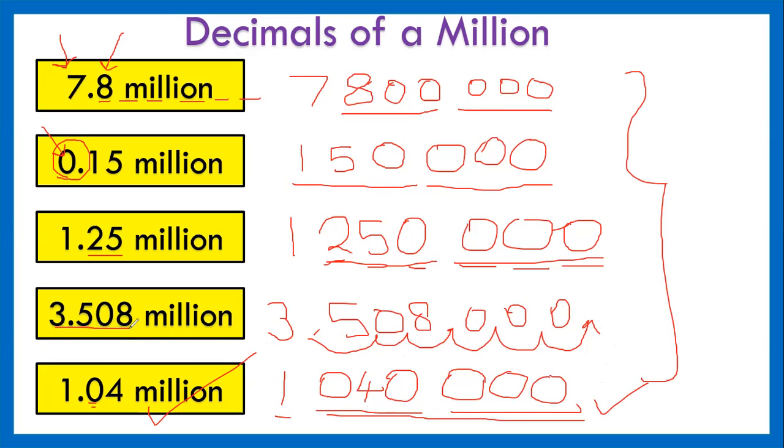This number is 1.04 million as the decimal million. But it's 1,040,000 as the whole number. 3.508 million. It's 3,508,000 as the whole number. 1.25 million is 1,250,000. 0.15 million is 150,000. Because it's less than 1 million, that's why you see a zero in the millions place value. Hope this was clear enough and you understood how to convert decimal millions to a whole number and vice versa. Vice versa means the reverse.